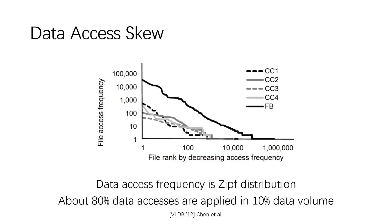However, data access frequency follows a ZIP distribution. That means 80% of data accesses will be applied to 10% of data volume. We call frequently accessed data hot data and infrequently accessed data cold data. So hot data dominates most degraded reads, while cold data dominates most storage space.